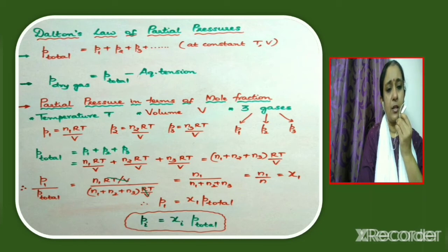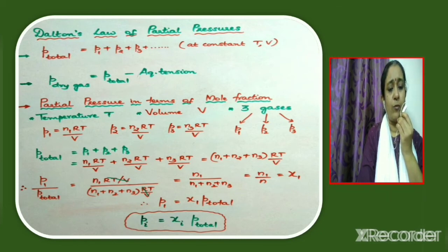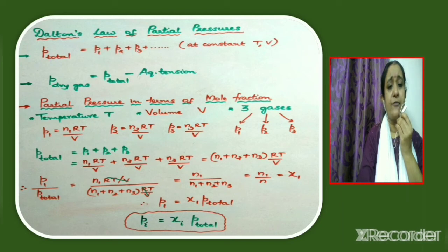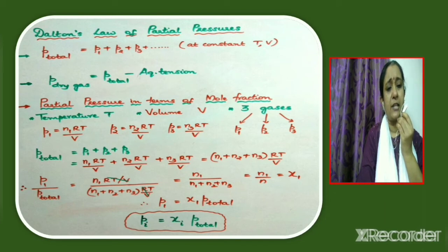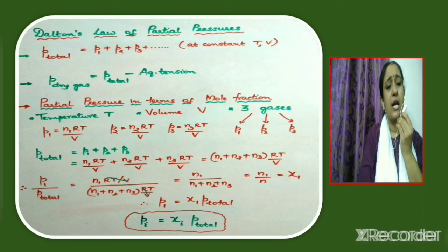Now divide P1 by P_total. P1 = n1RT/V and P_total = (n1 + n2 + n3)RT/V, so RT/V cancels, giving P1/P_total = n1/(n1 + n2 + n3). This is equal to the mole fraction of the first component, χ1, since mole fraction is the number of moles of that component divided by the total number of moles. Therefore P1 = χ1 · P_total, and similarly for the i-th component, Pi = χi · P_total.